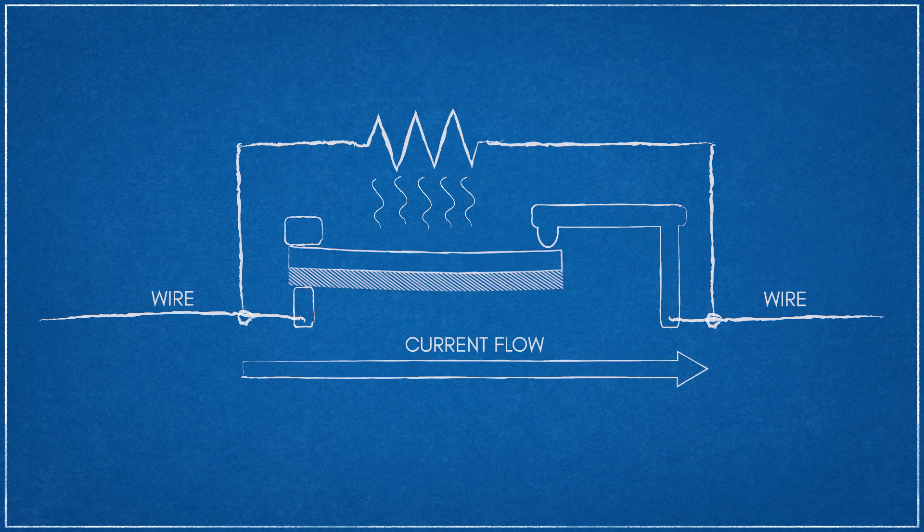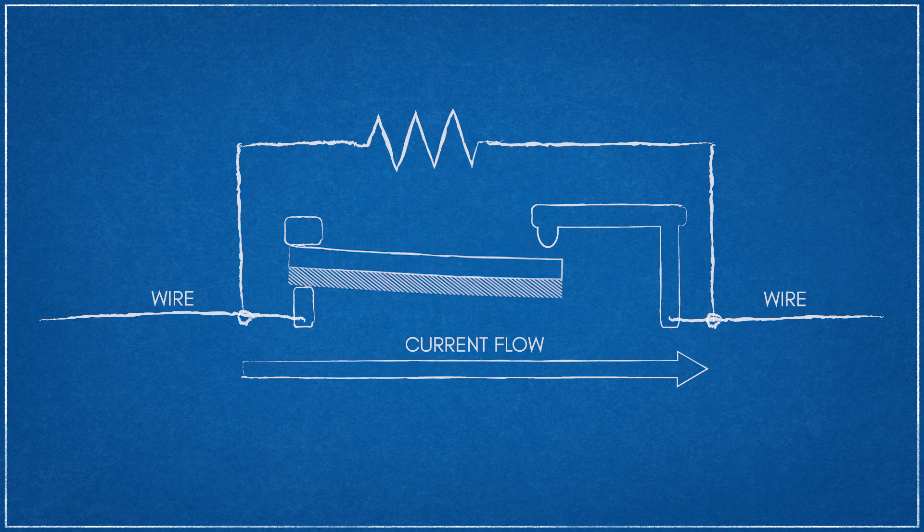Current is then shunted away from the heating element, cooling it. The bimetallic strip then contracts back to its original state. This opens the switch, restoring current back to the heating element.